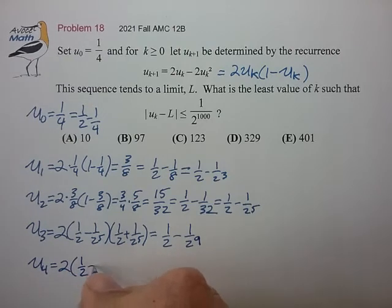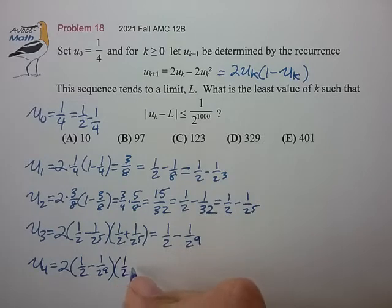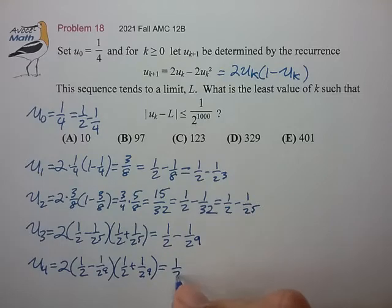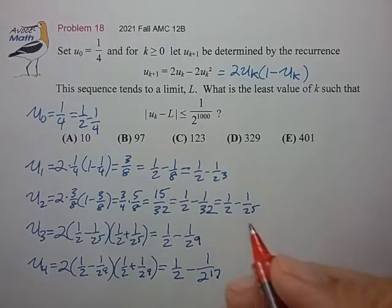I can plug that in to calculate what u₄ is. 1 half minus 1 over 2 to the ninth. 1 half plus 1 over 2 to the ninth. That then gives me 1 half minus 1 over 2 to the 17th.